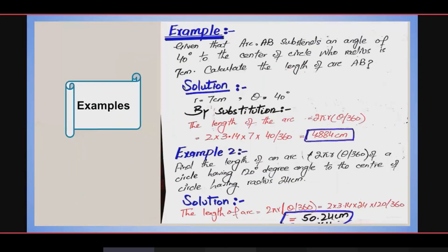Let us take an example of how to find the arc length of a circle. Given that arc AB subtends an angle of 40 degrees at the center of a circle whose radius is 7 cm, calculate the length of arc AB. Using the formula 2πr × θ / 360 and putting in the values, we get the answer 4.884 cm.